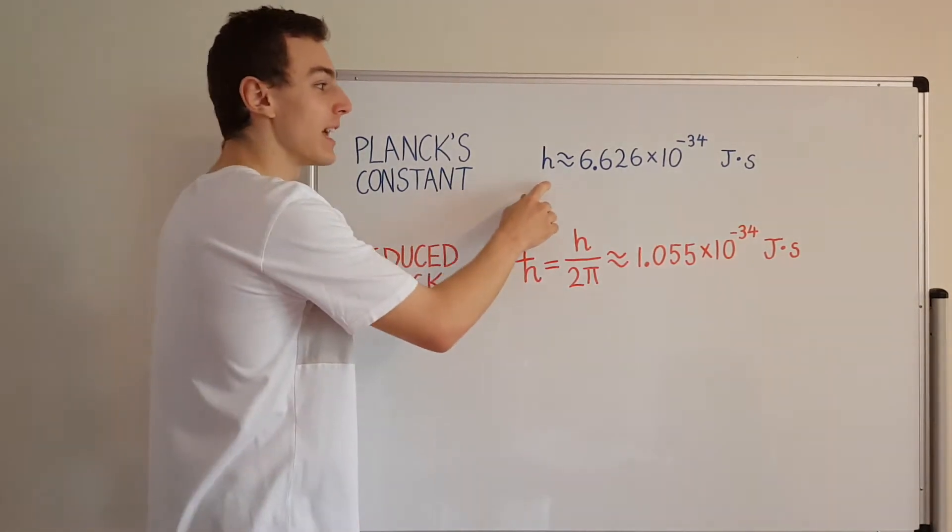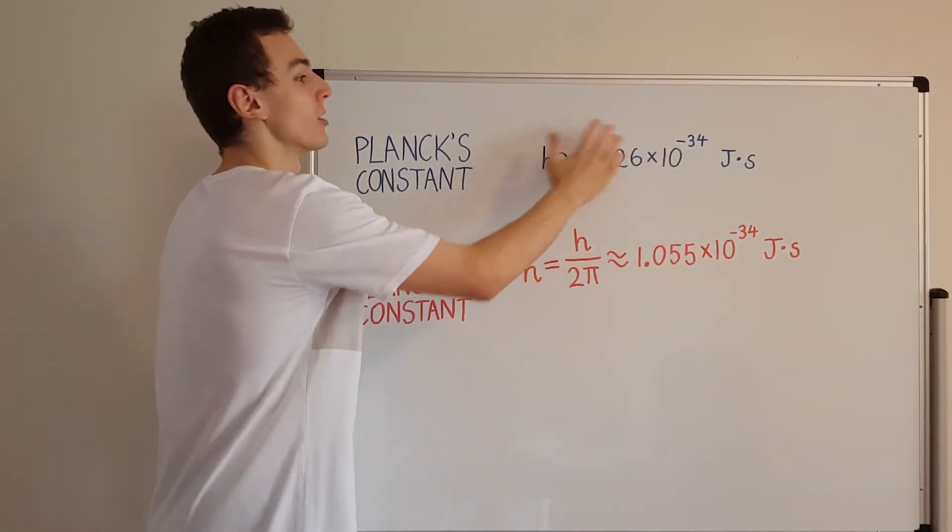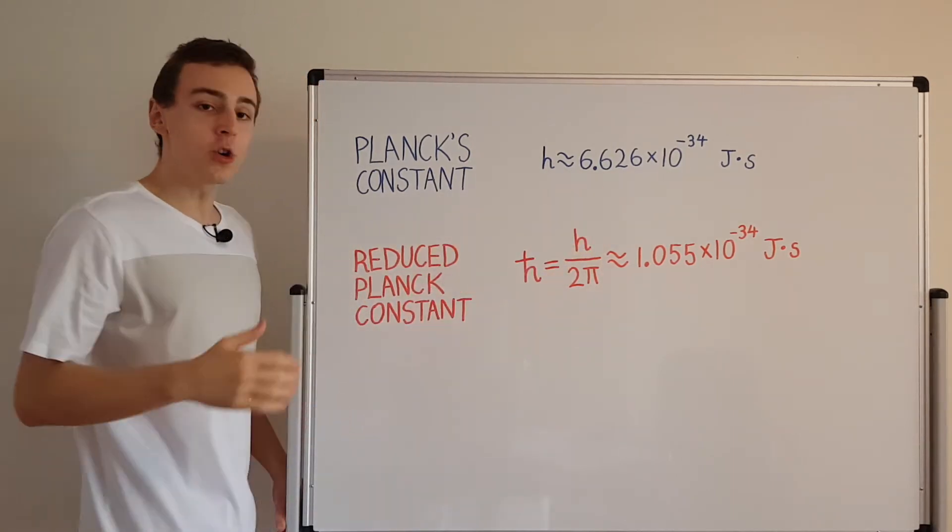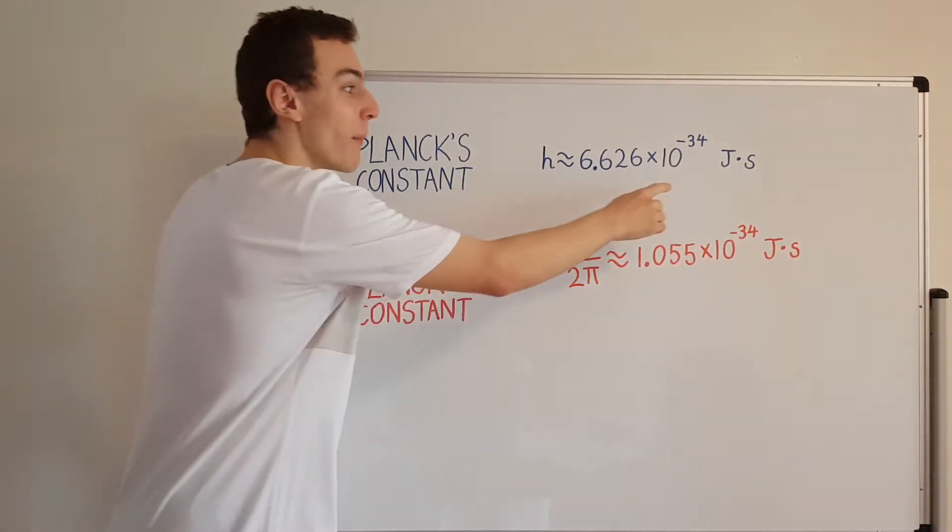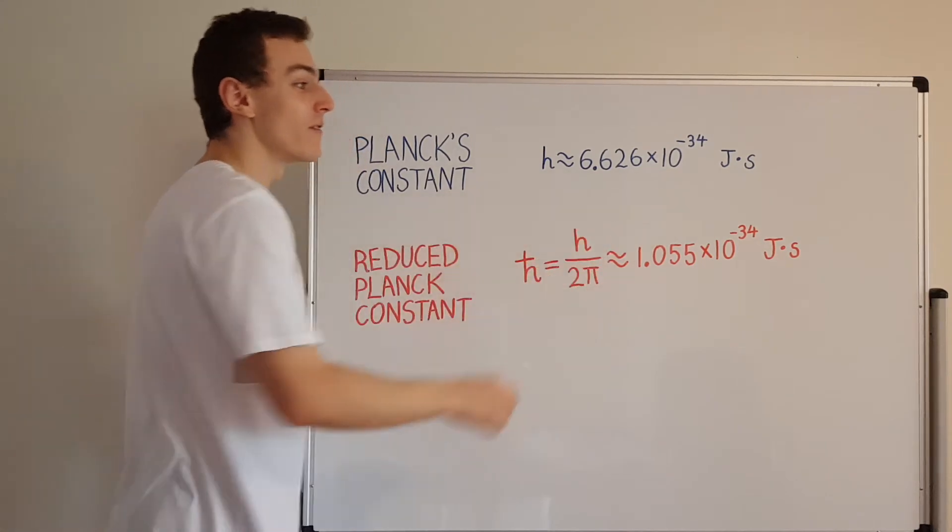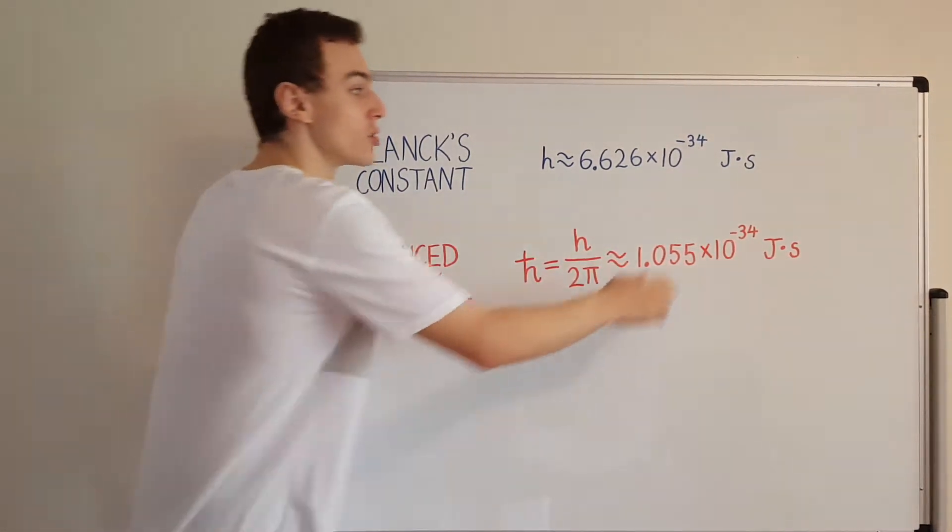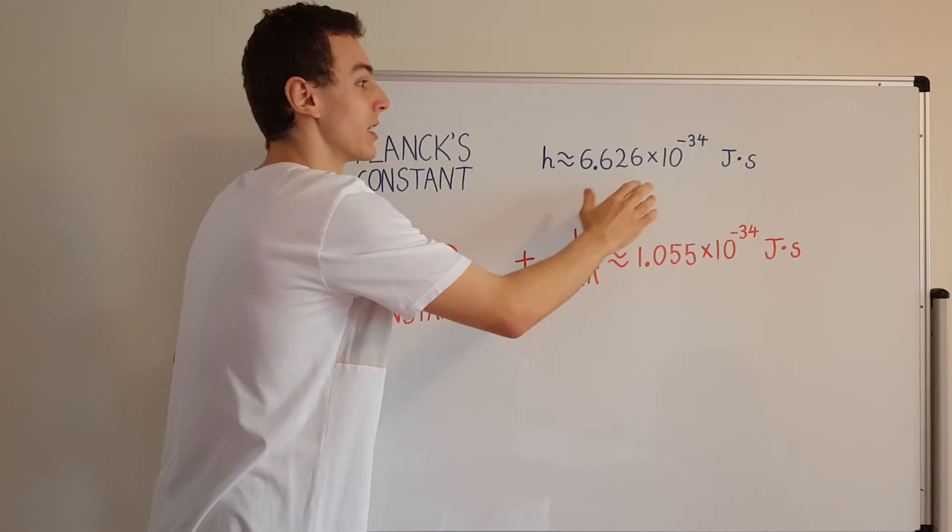So h is roughly this numerical value over here. Its order of magnitude is 10 to the minus 34. That's a very tiny number. And the units are joule seconds for this value over here.